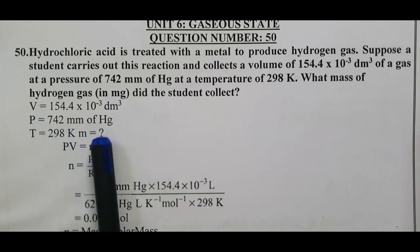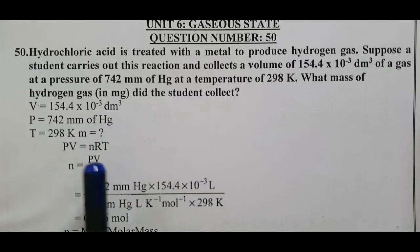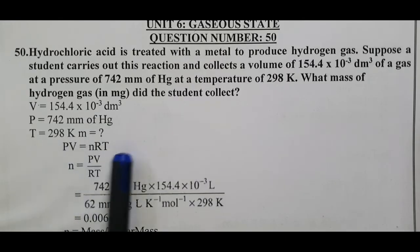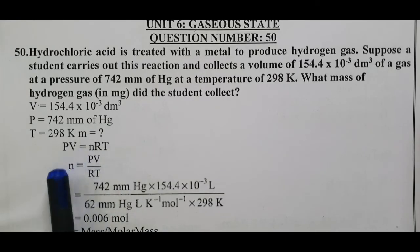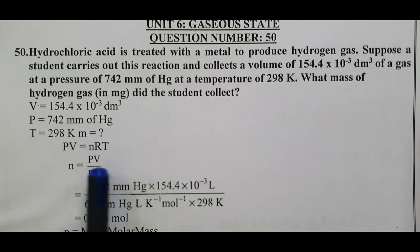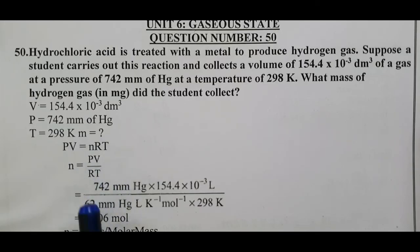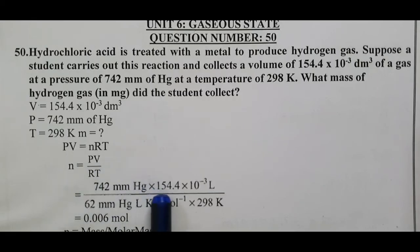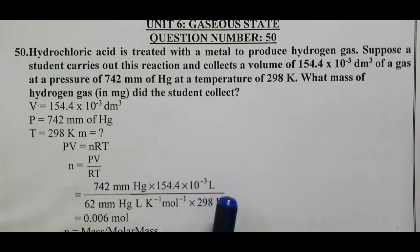We cannot directly calculate the mass; we must first calculate the number of moles, then find the mass. Using the ideal gas equation PV = nRT, we rearrange to n = PV/RT. Substituting: pressure = 742 mmHg, volume = 154.4 × 10⁻³ dm³ (liters).